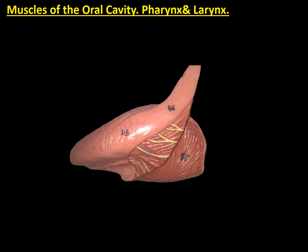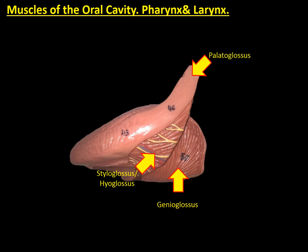If we remove the tongue from the model, we can see some of the extrinsic muscles of the tongue. Here, we observe fibres of the styloglossus and of the hyoglossus muscle at the lateral part. And much deeper, we can see some fibres of the genioglossus muscle. At the upper part, we can see the fibres of the palatoglossus muscle going by the superior and dorsal parts of the tongue.